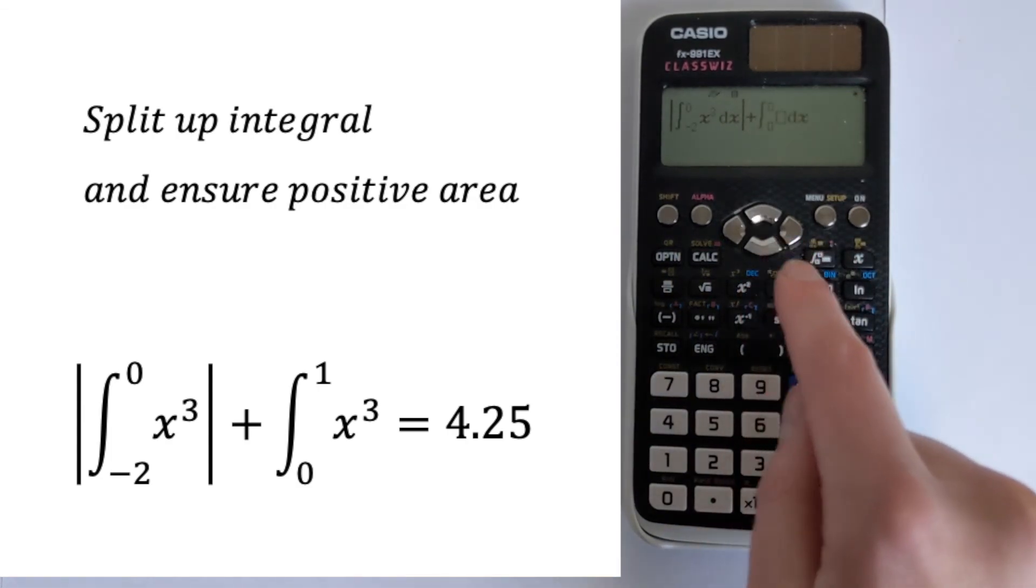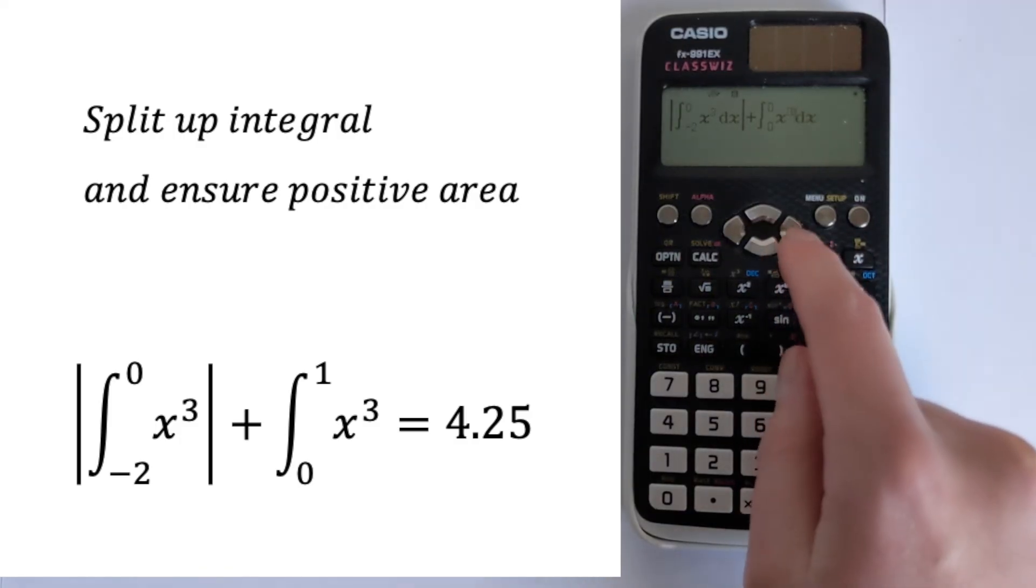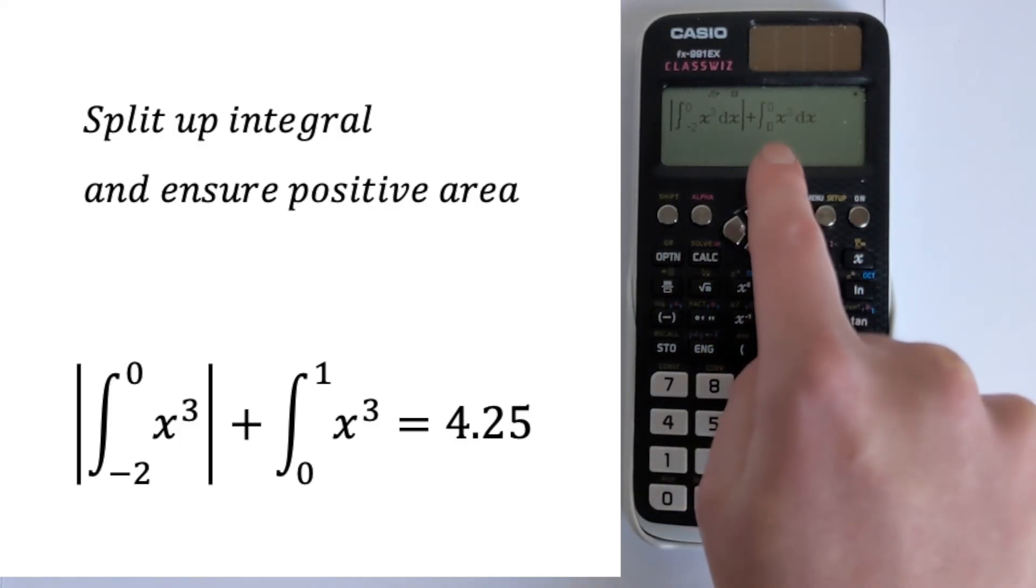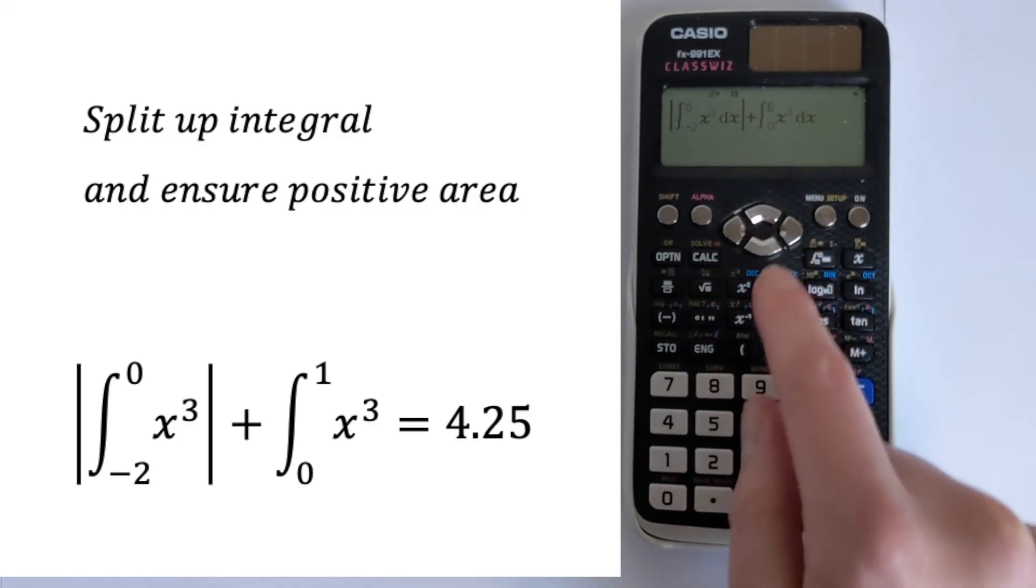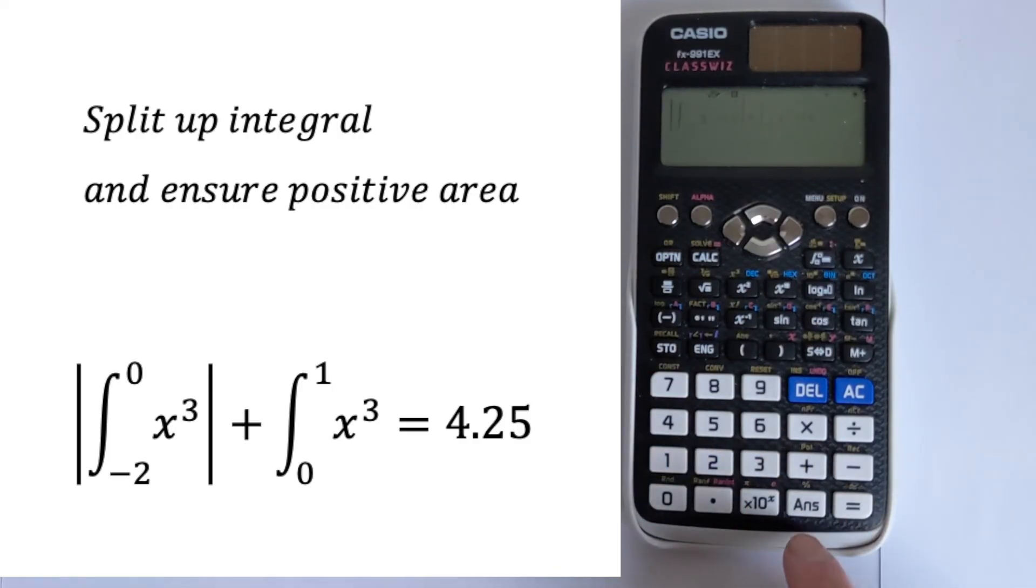And we can put another integral in. And we can do x cubed. And then we can enter our limits from zero up to one. Press equals. We get 17 over four, which is 4.25. And that is the correct answer.